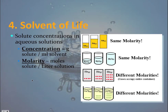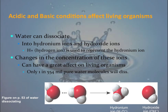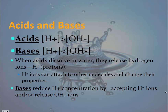We now turn to acid and base conditions, which affect living organisms. First, we look at water's ability to dissociate into particular ions, with special attention to hydronium and hydroxide ions. The hydronium ion is symbolized as H⁺, actually indicating H₃O⁺, formed when water acquires an additional hydrogen. Water can also dissociate into a hydroxide ion. Acids typically release hydrogen ions into solution, while bases reduce H⁺ concentrations by accepting hydrogen ions and releasing hydroxide ions.